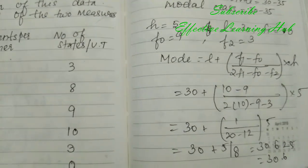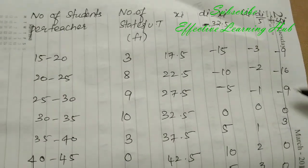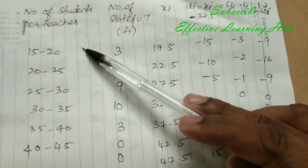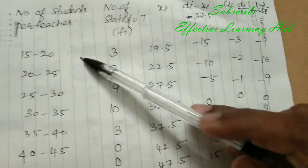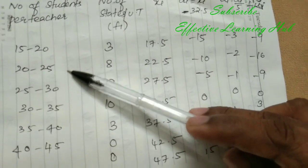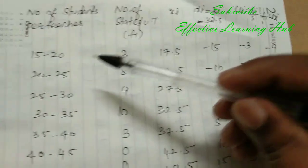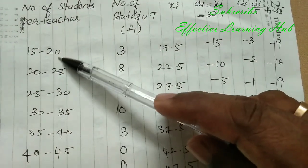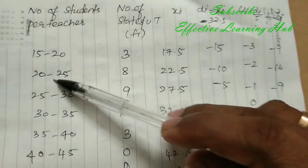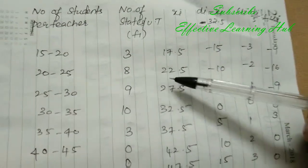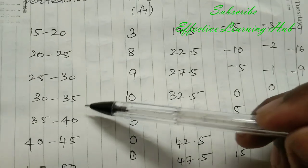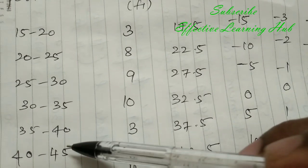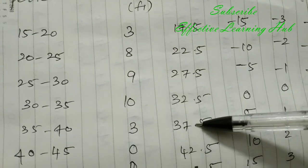Now find mean. Write the given data, number of states frequency. Already studied upper limit plus lower limit divided by 2. xi equal to: 15 plus 20, 35 divided by 2 is 17.5; 20 plus 25, 45 divided by 2 is 22.5; 25 plus 30, 55 divided by 2 is 27.5; 30 plus 35 divided by 2 is 32.5; 35 plus 40, 75 divided by 2 is 37.5.